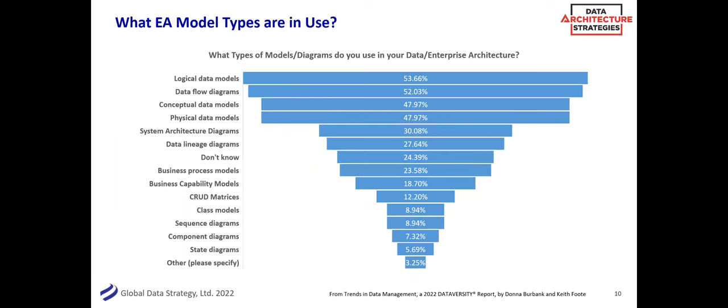A little bit of data around our different types of models. We do a survey — both Global Data Strategy and Dataversity — every year on trends in data management. One of the questions we ask is what types of models do you use in your data or enterprise architecture? No surprise to me — this was a data architect or data management survey, so data modeling things were up there first. But you also see business process models, business capability models, those CRUD matrices which are the interaction between process and data, and some UML-type stuff at the bottom. So it's a mix, and it should be a mix because there are a lot of different areas of the organization that need to fit together.